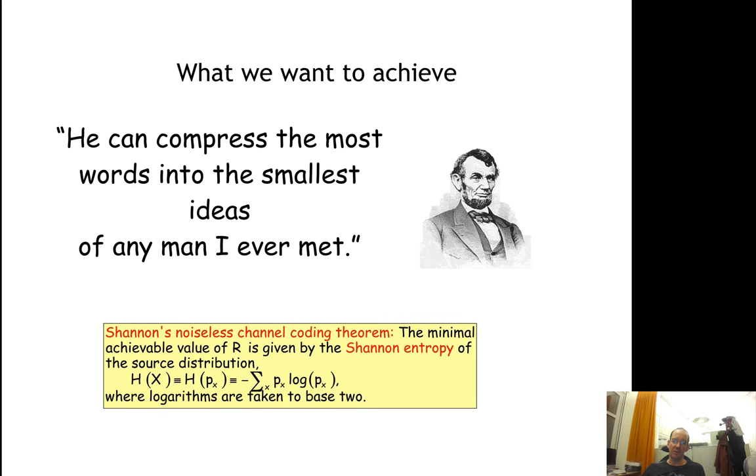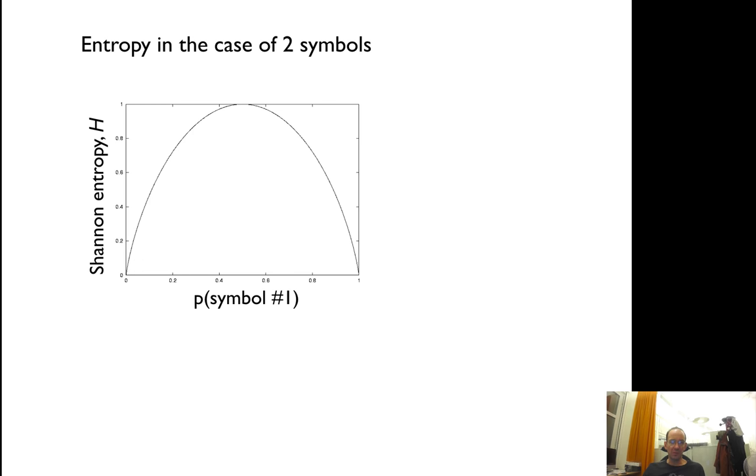If you have two states, you will have a channel entropy like that. Basically, if it's 1 or 0, the channel entropy is going to be 0, and if it's 0.5 it's going to be 1.